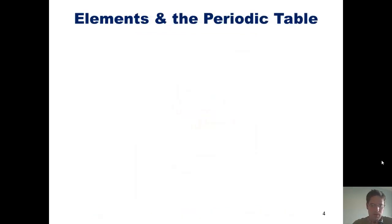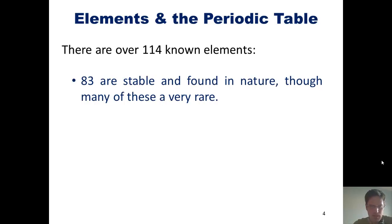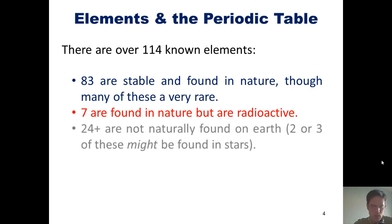Today I'll be teaching you more about elements and the periodic table. Did you know that there are over 114 known elements? 83 are stable and found in nature, though many of these are very rare. 7 are found in nature but are radioactive, and 24 or more are not naturally found on Earth. 2 or 3 of these might be found in stars.